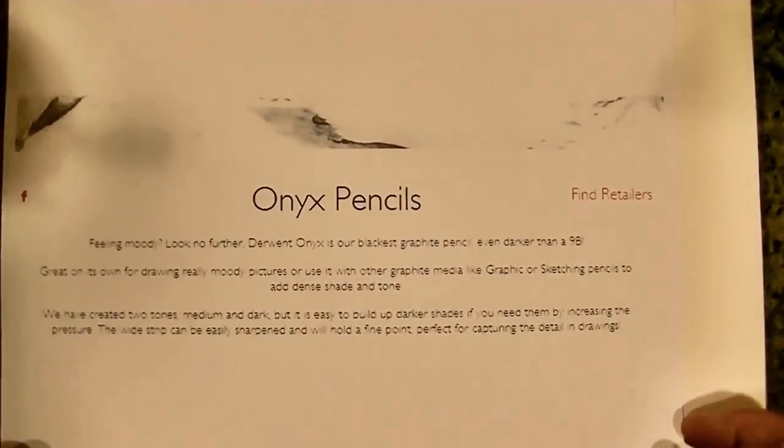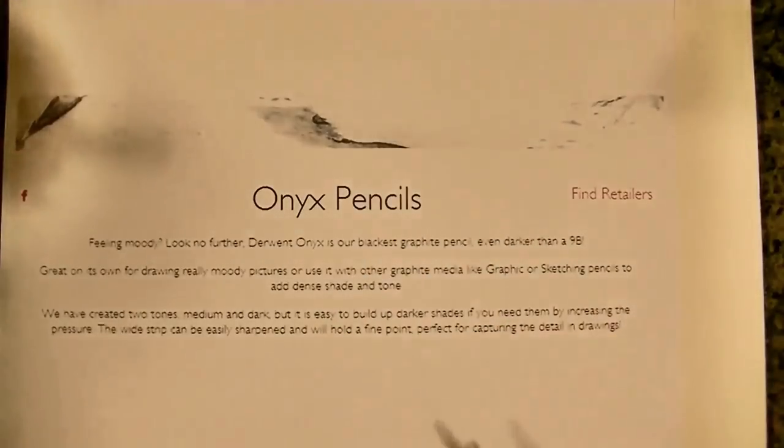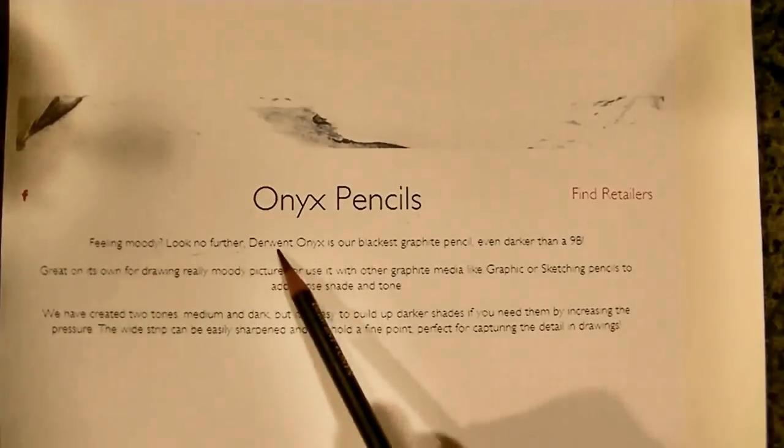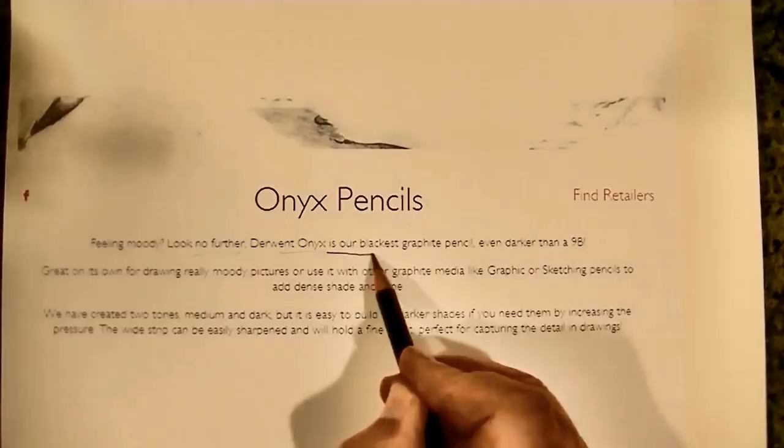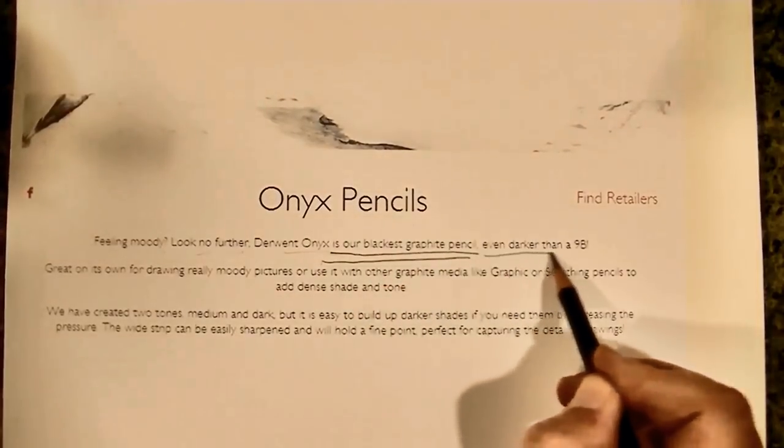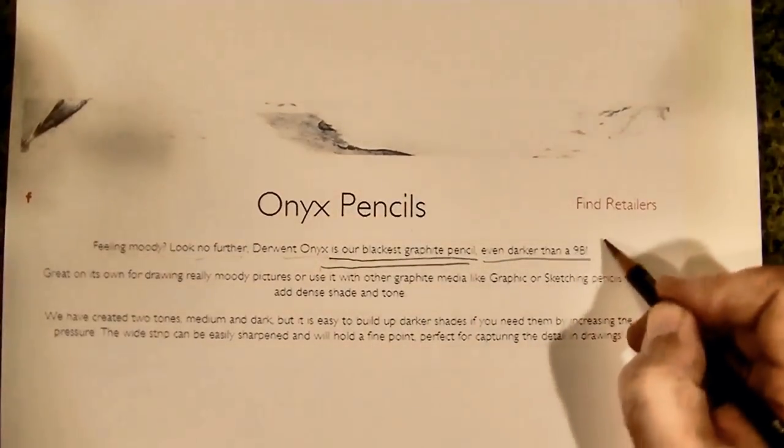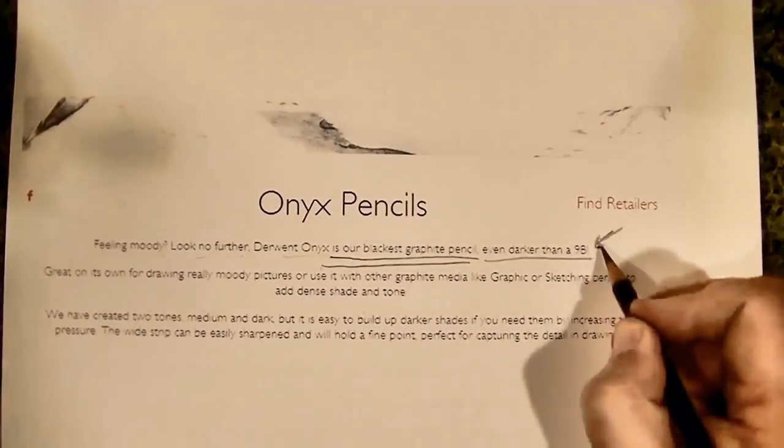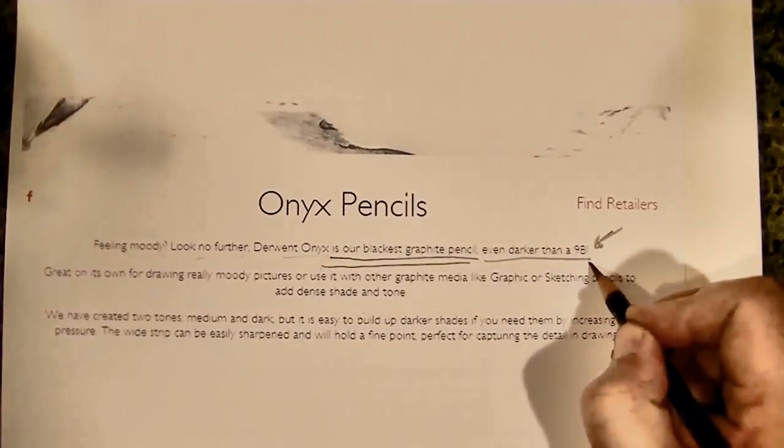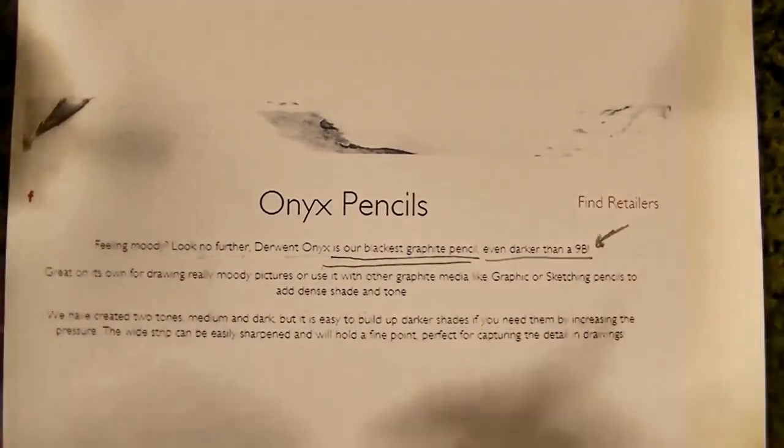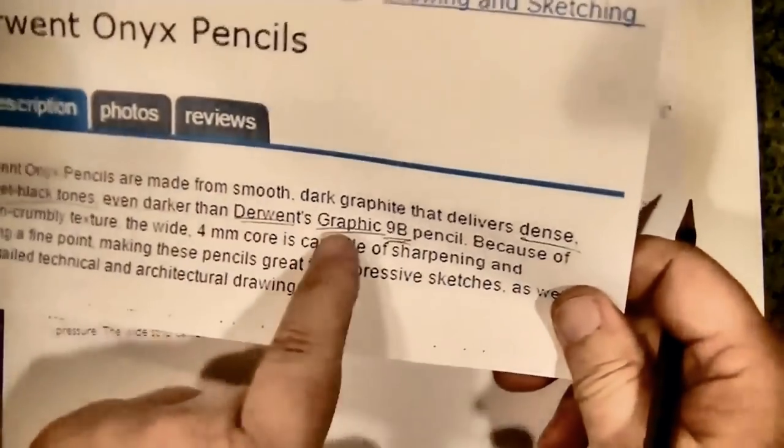Near the end of this video we'll see for ourselves if it really is darker than Derwent's graphic 9B. I think you'll be surprised at the results. I certainly was, and I had already bought a whole boatload of those pencils. And here's what they say at the Derwent site itself: their Onyx pencils, feeling moody? Look no further. Derwent Onyx is our blackest graphite pencil, even darker than a 9B.